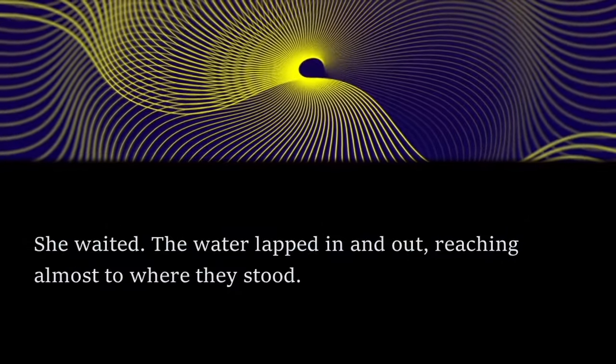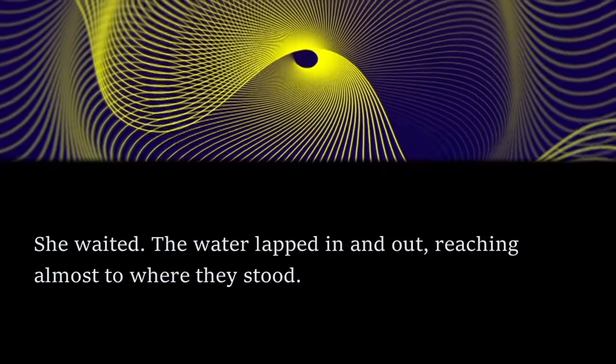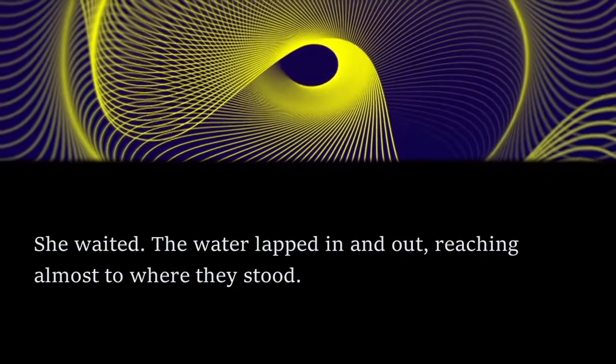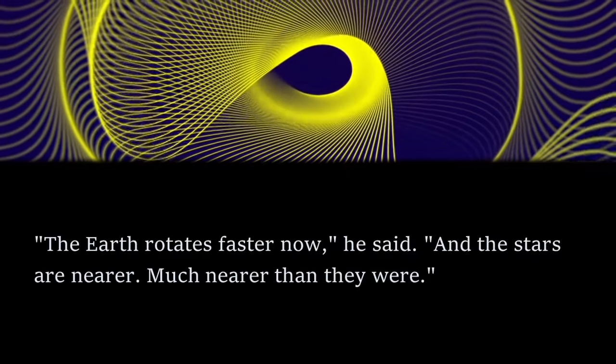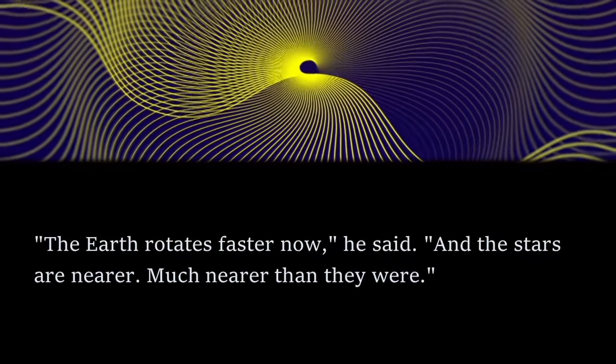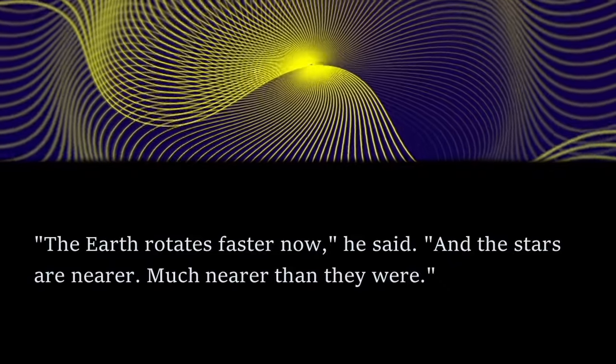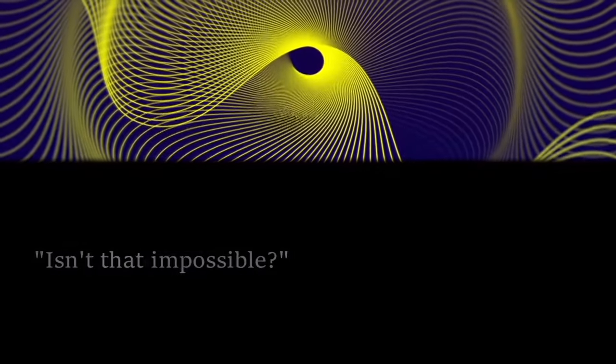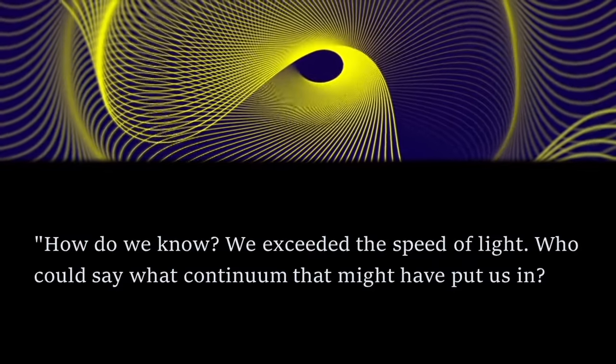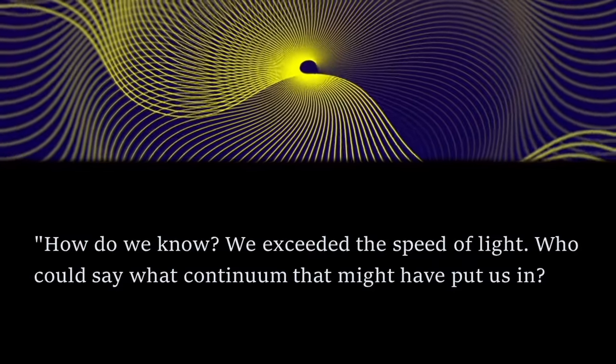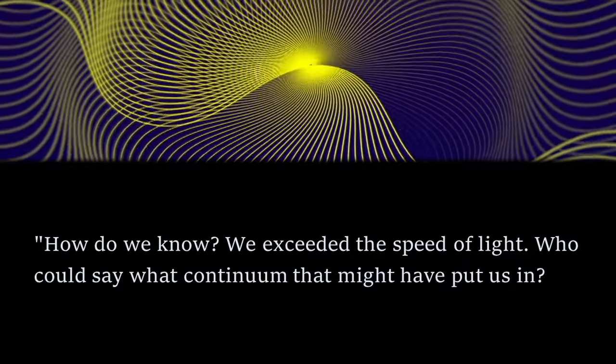Those things could happen for several reasons, but there's only one explanation for the other changes, the ones I found on the star charts. She waited. The water lapped in and out, reaching almost to where they stood. The earth rotates faster now, he said, and the stars are nearer, much nearer than they were. Isn't that impossible? How do we know? We exceeded the speed of light. Who could say what continuum that might have put us in?